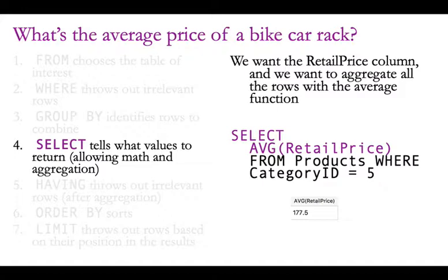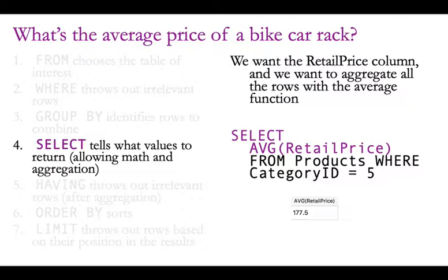Step four tells us what values to return, allowing math and aggregation. In this case I've used an average aggregation: SELECT AVG(retail_price) FROM products WHERE category_id equals five. This gives 177.5, and that's the answer we're looking for. We're not going to bother with steps five, six, and seven. So we built the query — it wasn't terribly complicated, but using a step-by-step approach allowed us to get the answer without too much pain. For more complex queries, it'll be very necessary to use a step-by-step iterative approach rather than just trying to write it all at once.